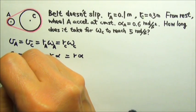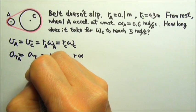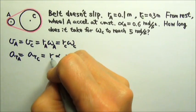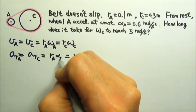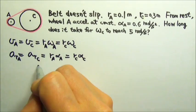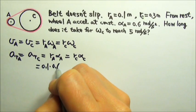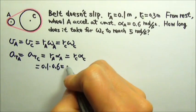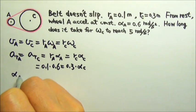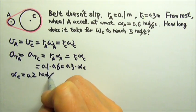So the tangential acceleration of the point on the rim of wheel A equals the tangential acceleration of the point on the rim of wheel C. R_A times alpha_A equals R_C times alpha_C. We know that R_A is 0.1, alpha_A is 0.6, R_C is 0.3. So we can find alpha_C. Alpha_C is 0.2 radians per second squared.